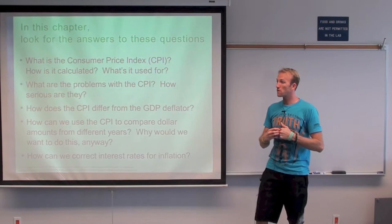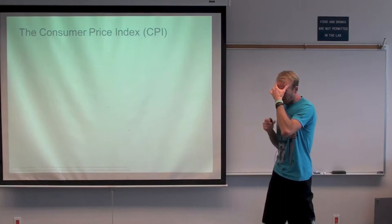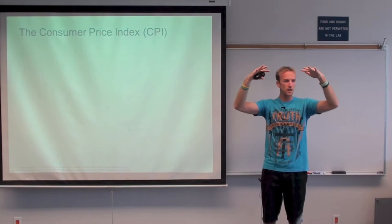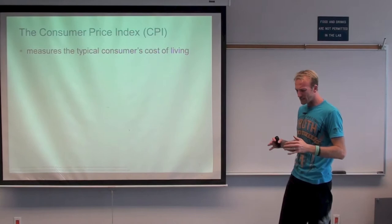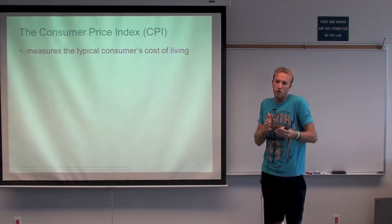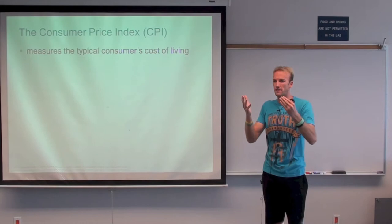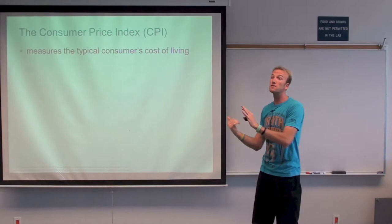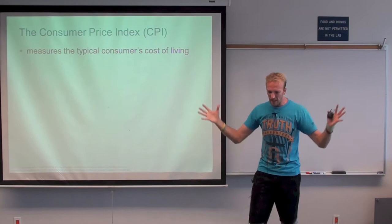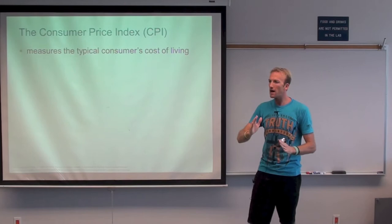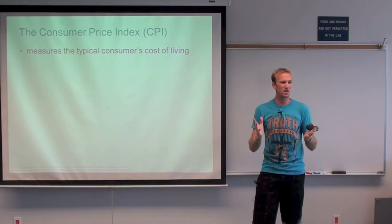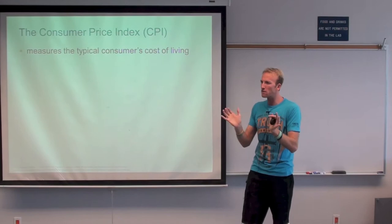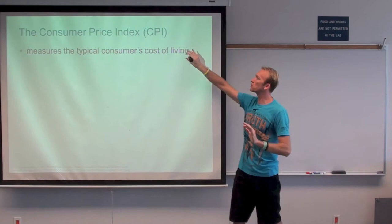Let's think about this consumer price index. What I'm trying to teach you is how to measure when all the prices go up together. If I say prices are 2% more expensive this year than last year, that doesn't mean all prices are exactly 2% more expensive. Maybe some are only 1% more expensive, some are 10% more expensive, and some prices — like flat screen TVs — are actually a couple percent lower. This is a big averaging problem.